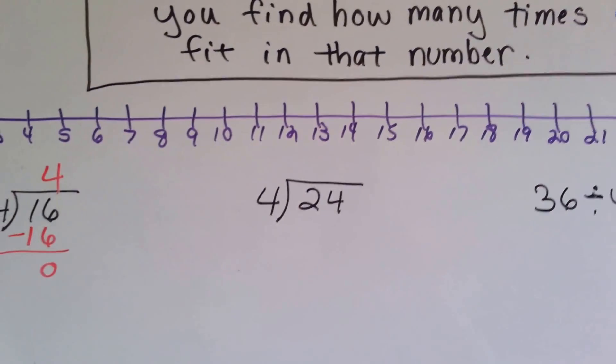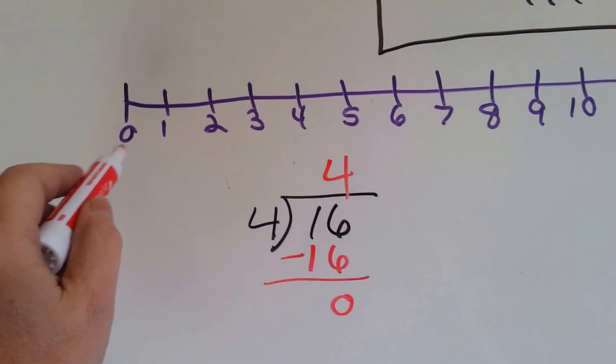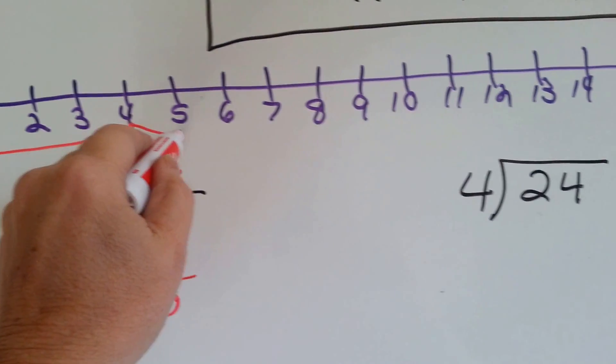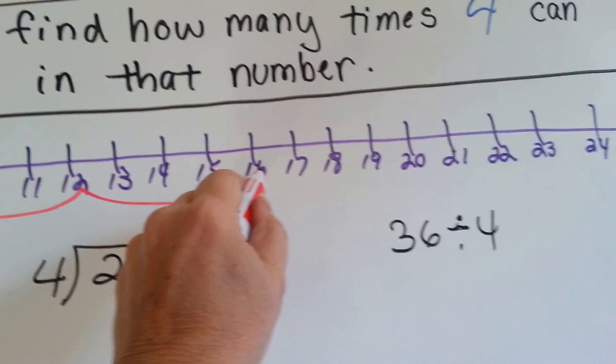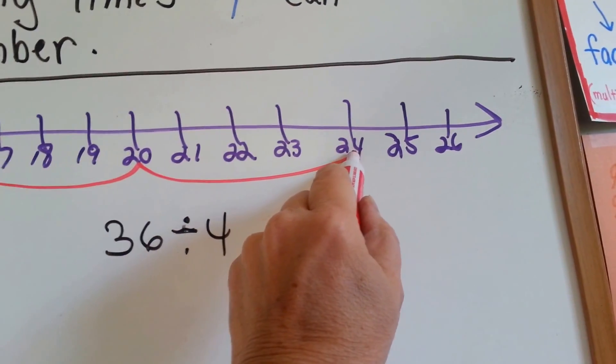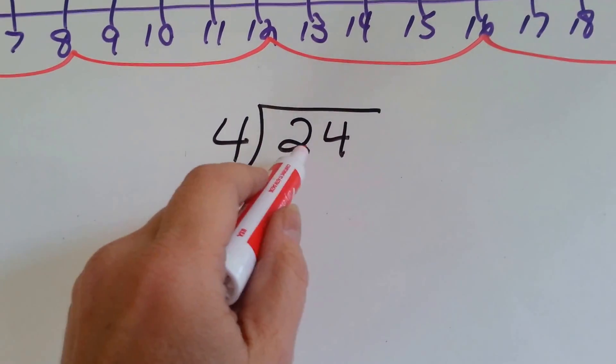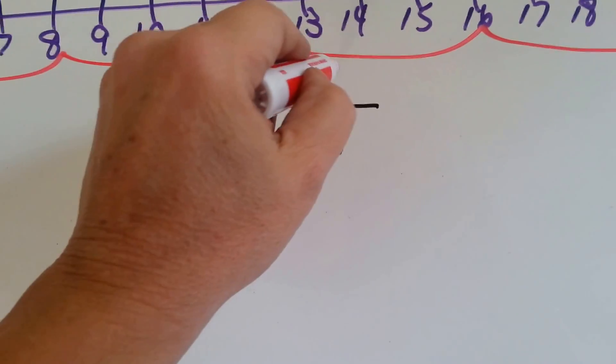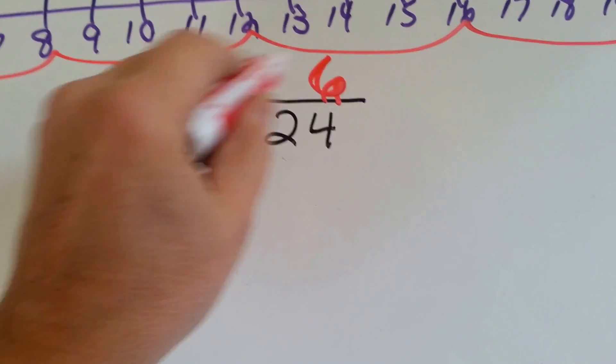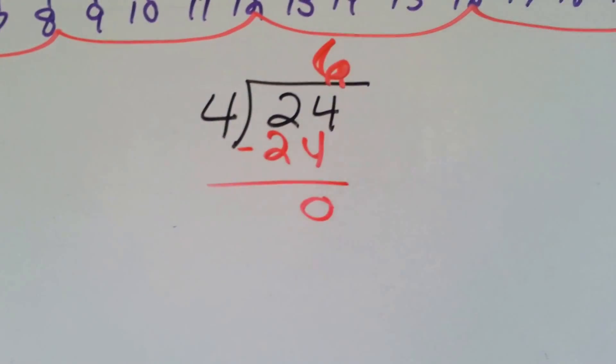Now let's use the number line. 4 goes into 24 how many times? We're going to skip count on our number line by 4s until we get to 24. 1, 2, 3, 4, 5, 6. Now we're at 24 and we skipped 6 times. So 24 can be divided by 4 6 times. To finish it, we need to do the multiplication of 4 times 6 is 24. Do our subtraction and get our 0.